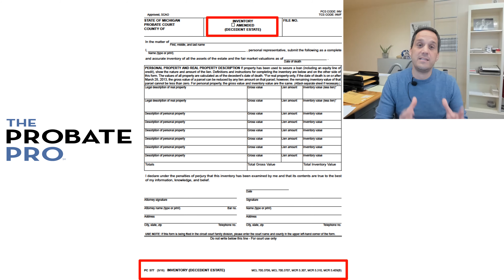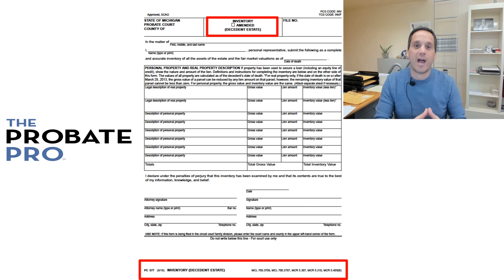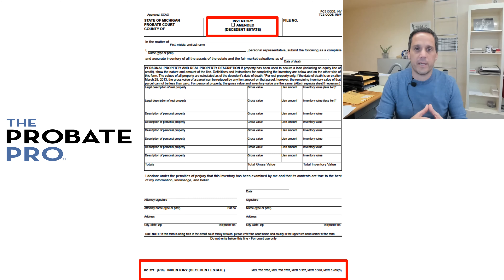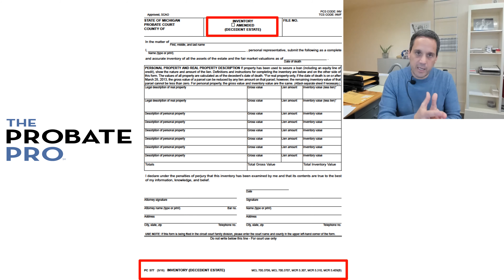This is an important consideration because in Michigan, unless it's a supervised administration, the inventory and the assets identified within the inventory are kept private — private among those that are interested within the estate. After the form is presented to the probate court and the inventory fee is determined, it must be served upon the interested persons as defined under the Michigan court rules.